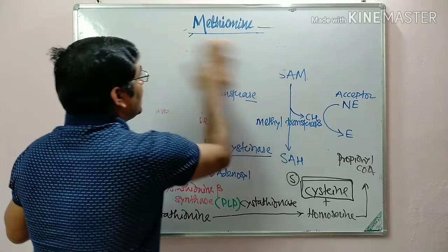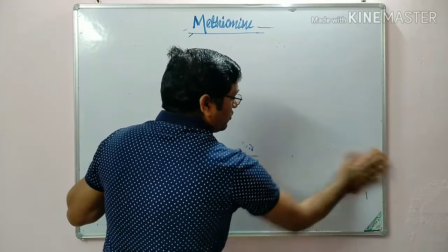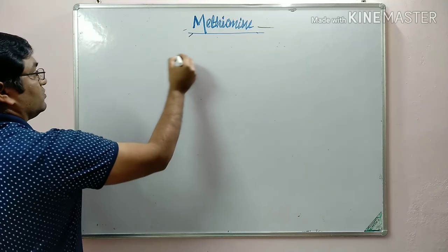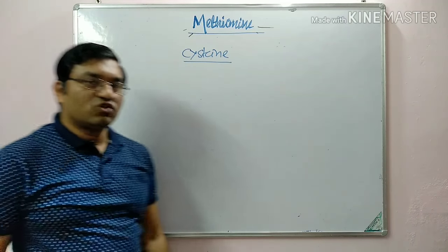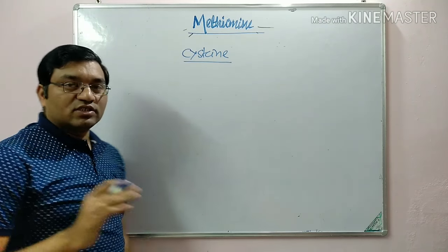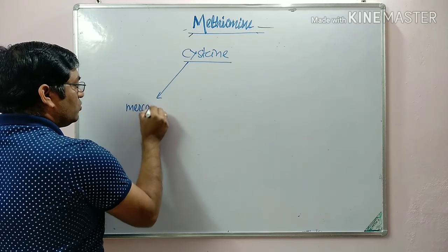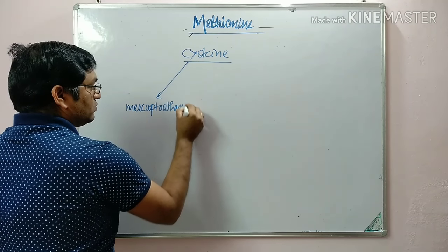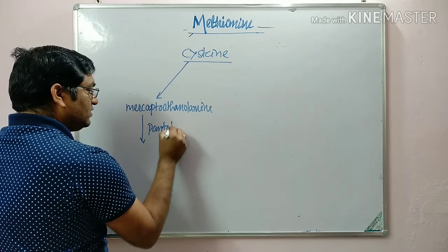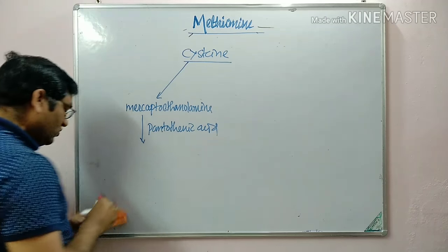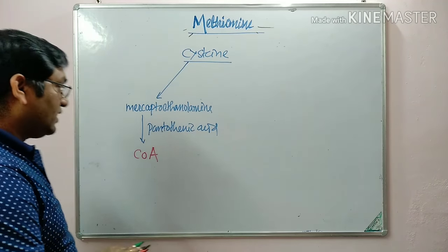The third step is degradation of cysteine, which is somewhat more complex. In cysteine degradation, remember the key products: cysteine is converted into mercaptoethanolamine, which with pantothenic acid gives coenzyme A. So the first important product from cysteine degradation is coenzyme A.